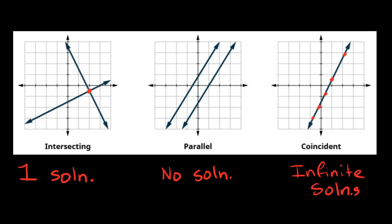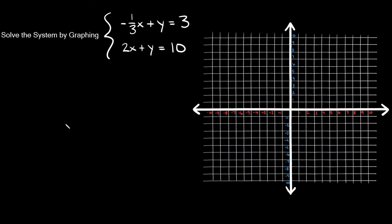I'm going to do one example of each so you know what it looks like. Let's start with this first example — solve the system by graphing. It gives us two equations: negative one-third x plus y equals three, and two x plus y equals ten. We'll use slope-intercept form, y equals mx plus b.